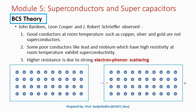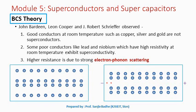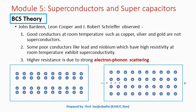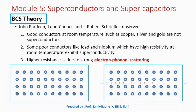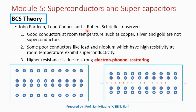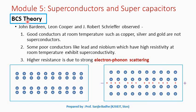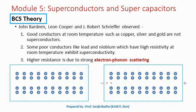Superconductivity was discovered in 1911 by K. Onnes. But the theory explaining this superconductivity phenomenon was available only in 1957. This long delay in development of the theory indicates how difficult it was to formulate. John Bardeen, Leon Cooper, and J. Robert Schrieffer put forward their theory, which is known as BCS theory, to explain the superconductivity phenomenon.